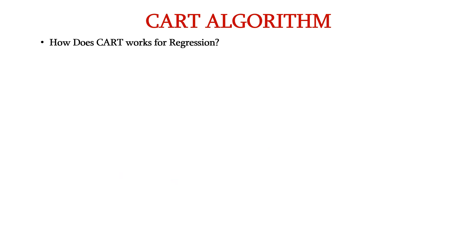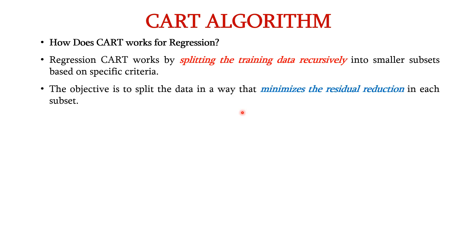Similarly, let us see how CART works for regression. Like classification, regression CART also works by splitting the training data recursively into smaller subsets based on certain criteria. The objective is to split the data in a way that minimizes the residual reduction in each subset.